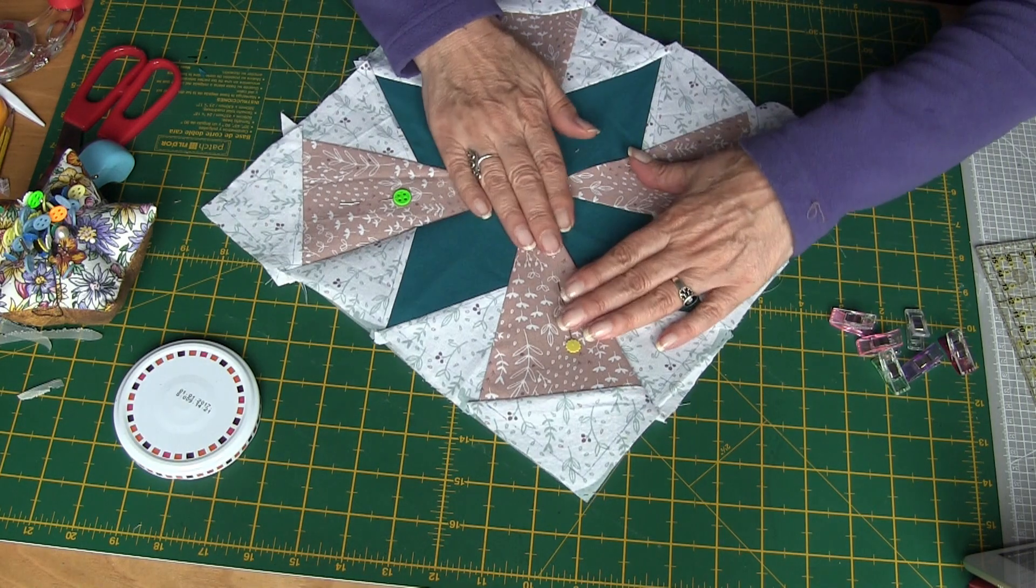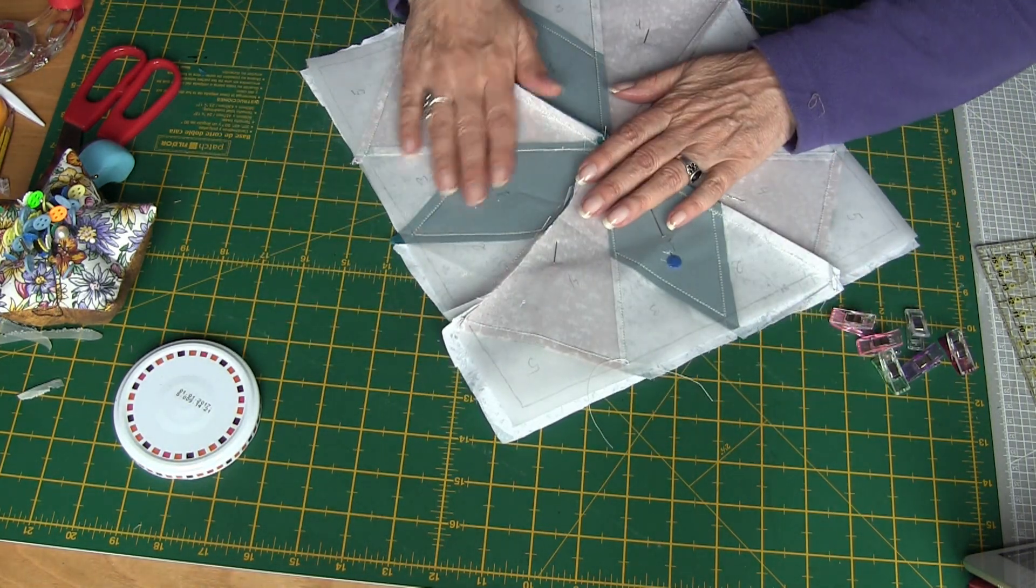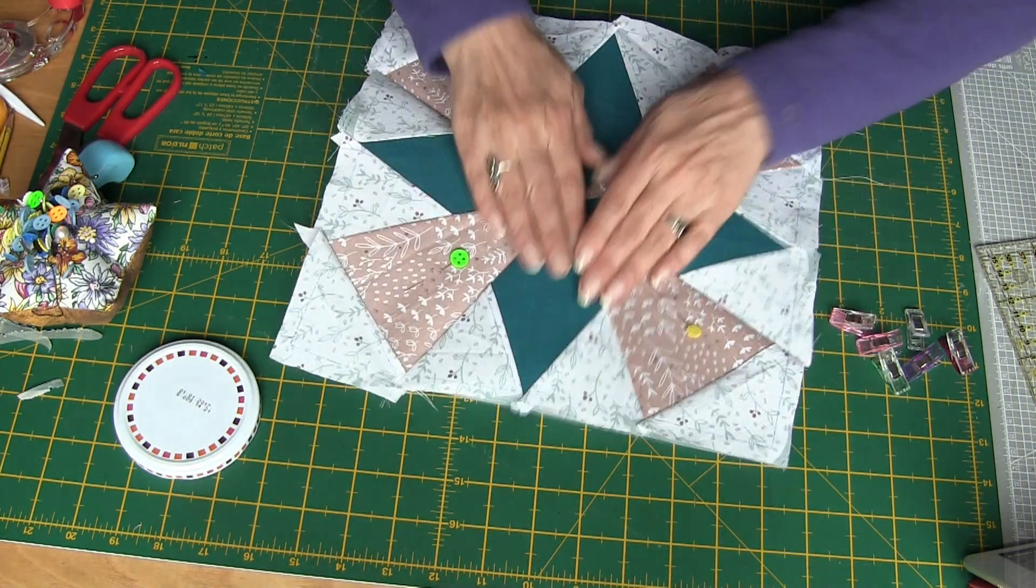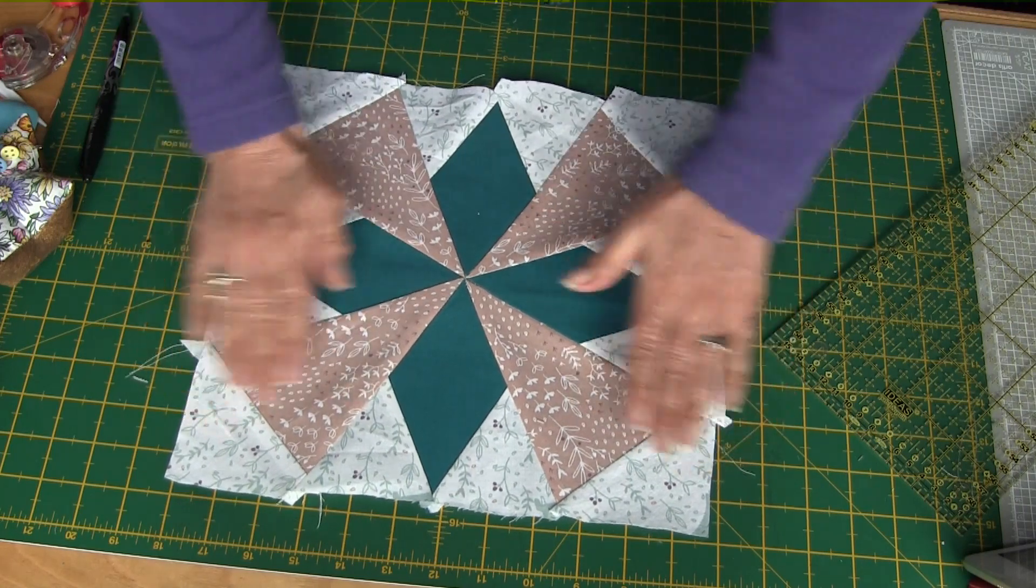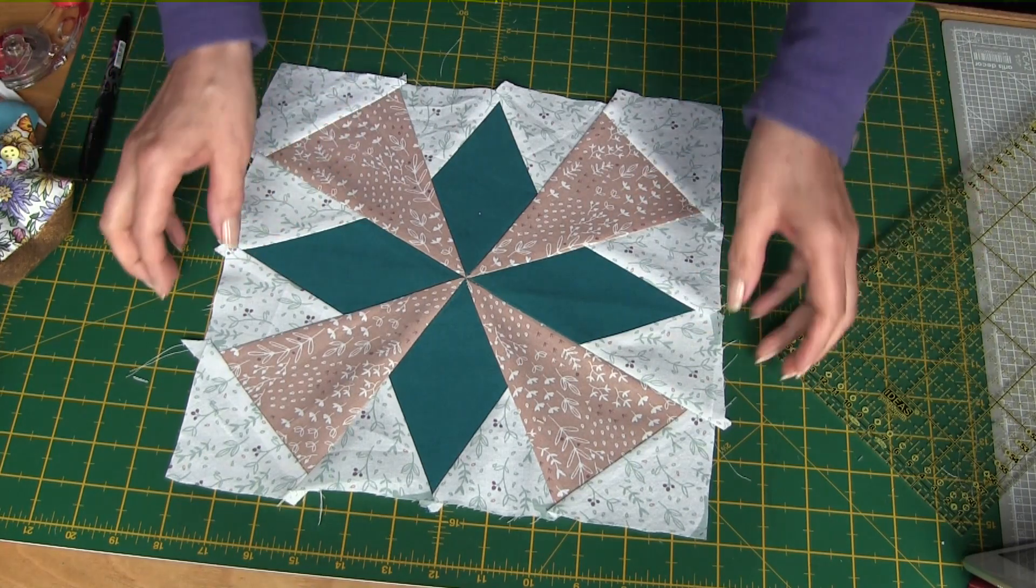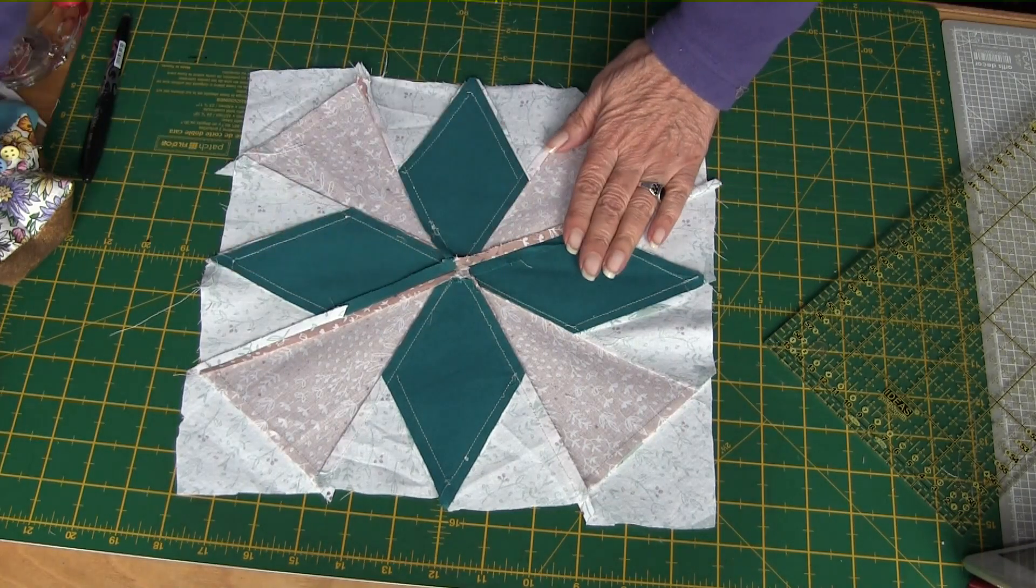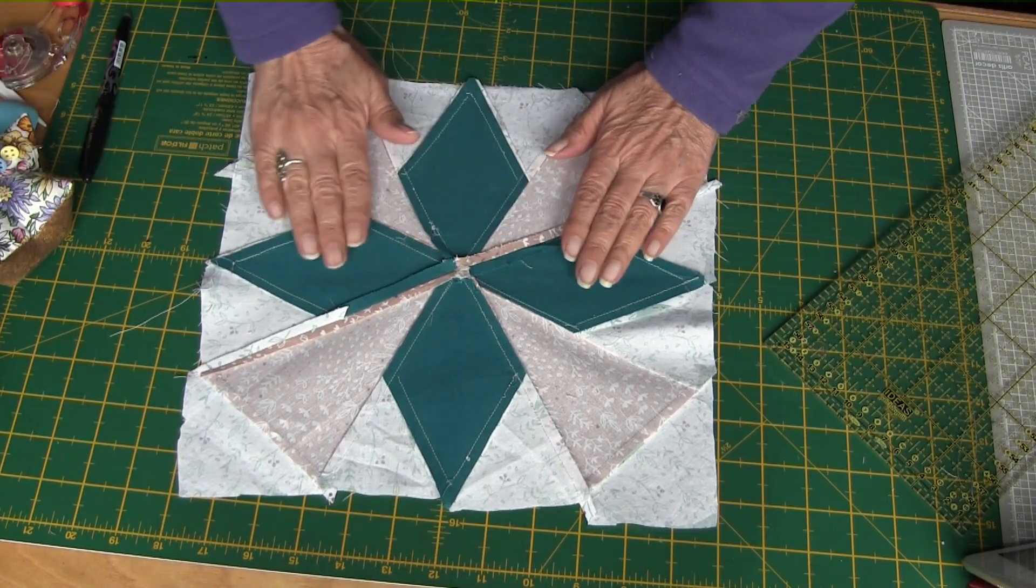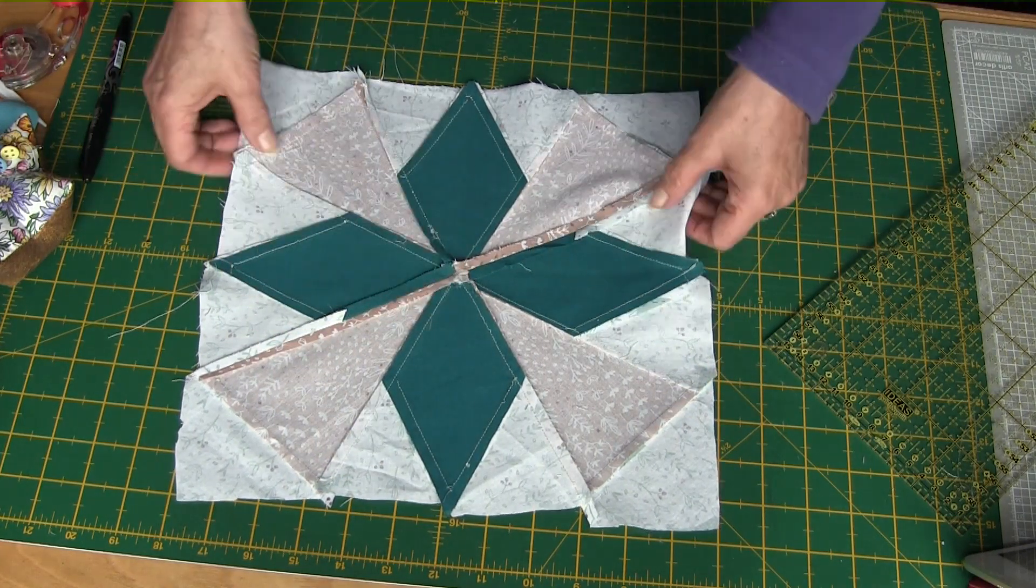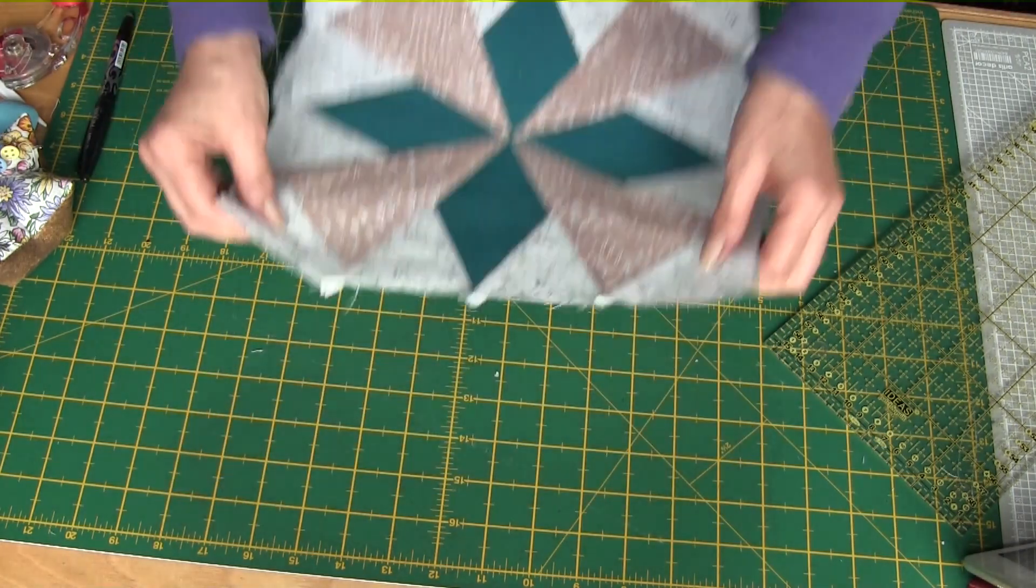Ya hemos terminado. Ahora lo que queda es quitar todos los papeles y darle un planchazo. Ya está terminado el bloque Belleza de callo hueso. Así ha quedado por el revés. He planchado todas las costuras a los lados menos la del centro, que la he abierto para que no quedase tanto tantas telas.